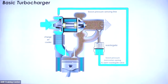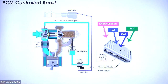When we talk about wastegate, we also have to talk about PCM-controlled boost. In the first example, we were talking essentially of a mechanical or vacuum-actuated wastegate system. In this scenario, we have the same setup — still a turbine wheel and a compressor wheel, exhaust going out, air coming in, and a wastegate controlling that boost. The only difference is it's now PCM controlled.